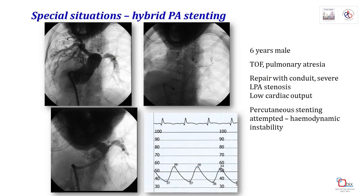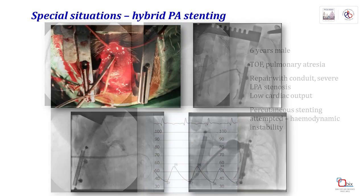Finally, a few words on the hybrid method of PA stenting by way of a case example. This is a 6-year-old boy with TOF and pulmonary atresia who had conduit repair and was stuck in the ICU because of low cardiac output syndrome due to severe LPA stenosis. He couldn't tolerate percutaneous stenting, as the sick ventricle could not tolerate a stiff guide wire and stiff catheter with a long sheath to be negotiated into the pulmonary artery. The following day, the patient was brought to the hybrid lab and the surgeon helped insert a short sheath at the RVOT, giving direct access to the left pulmonary artery, allowing LPA stent implantation without major complication.